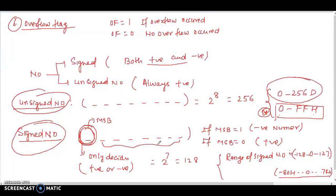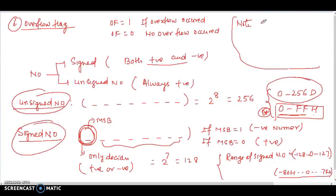If the result of an operation on unsigned numbers falls between 0 and FFH, then the overflow flag is 0 — no overflow. If the value comes out of that range, then the overflow flag becomes 1. For signed numbers, overflow flag is about the range of -80H up to 7FH.